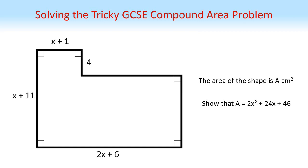We're told that the area of the shape is A square centimetres and we need to show that A equals 2x squared plus 24x plus 46.